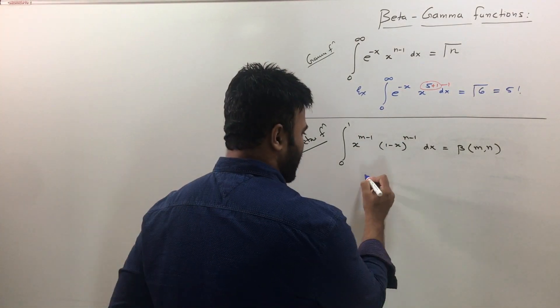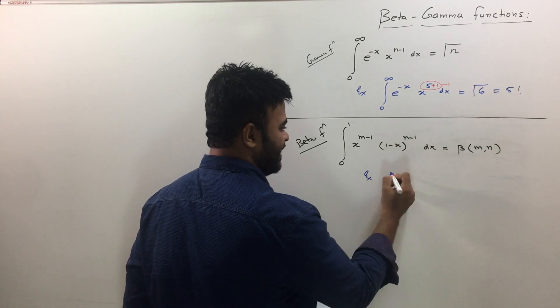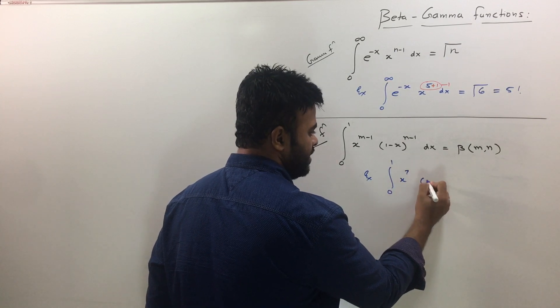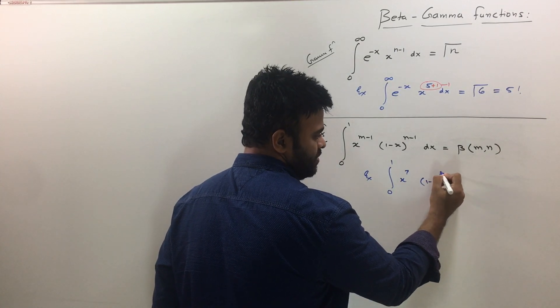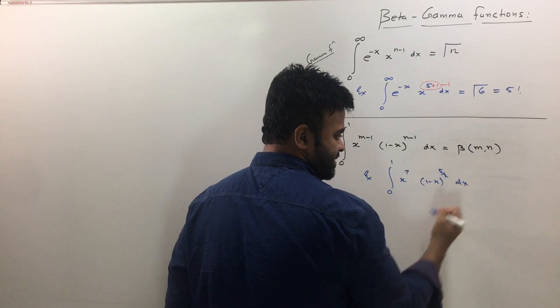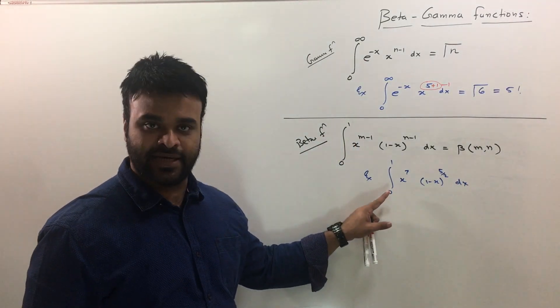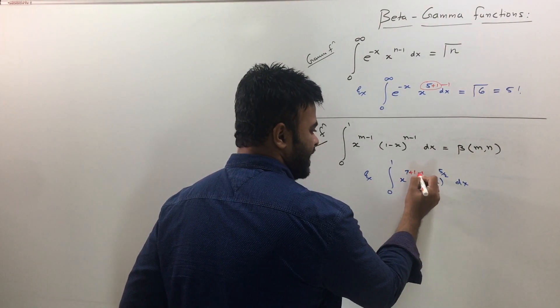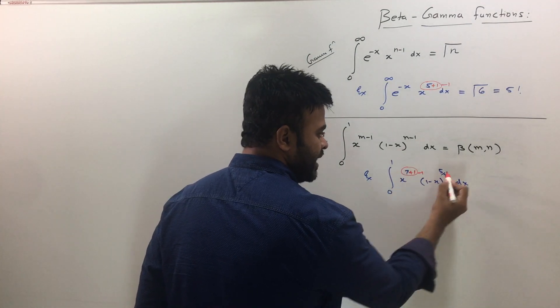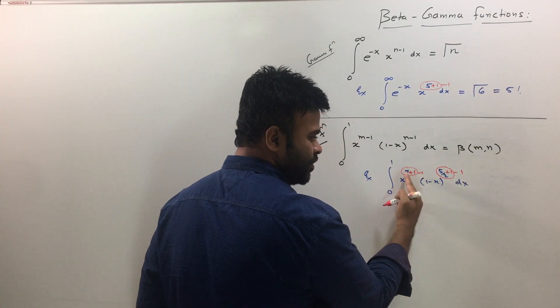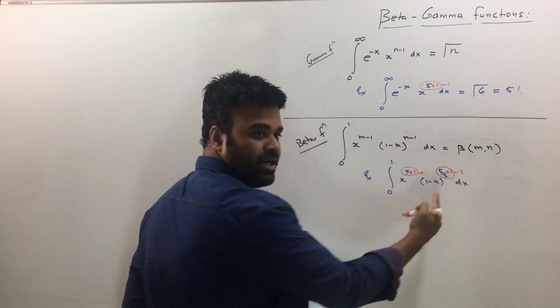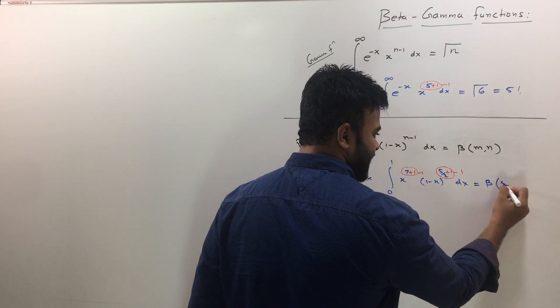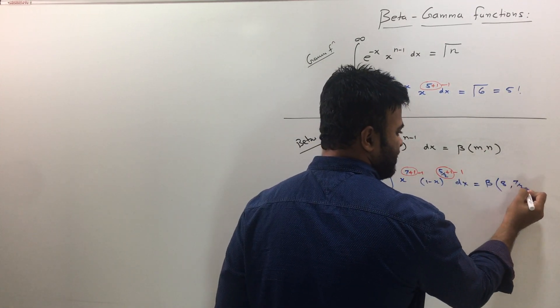As you can see beta and gamma both are standard integrals whose values are ready and since the values are ready you don't have to solve them, just write down and get the final answer. Let me take one more example for the beta one now. For example supposing if I have integral going from 0 to 1, then say x raised to 7, 1 minus x raised to say 5 by 2 dx. Now I want to find out the answer to this integral. The same procedure: just add 1 and subtract 1 and club these two, then again add 1 and subtract 1 and club these two.